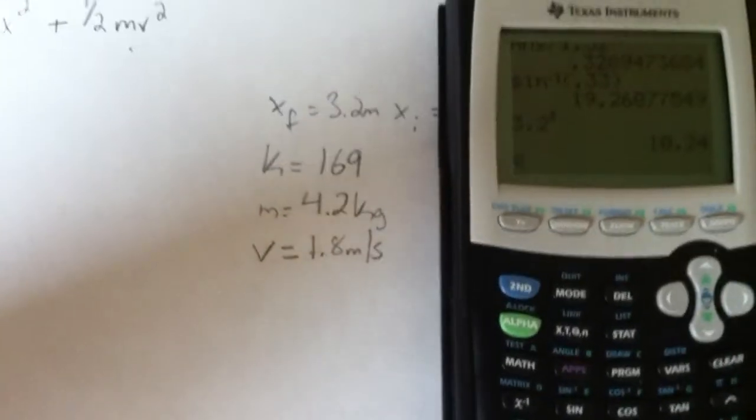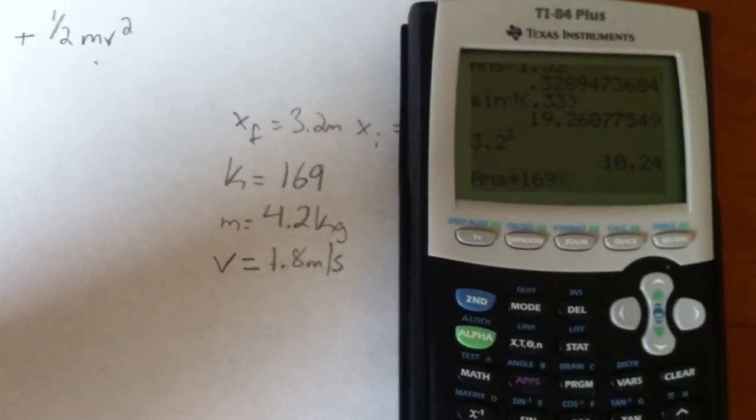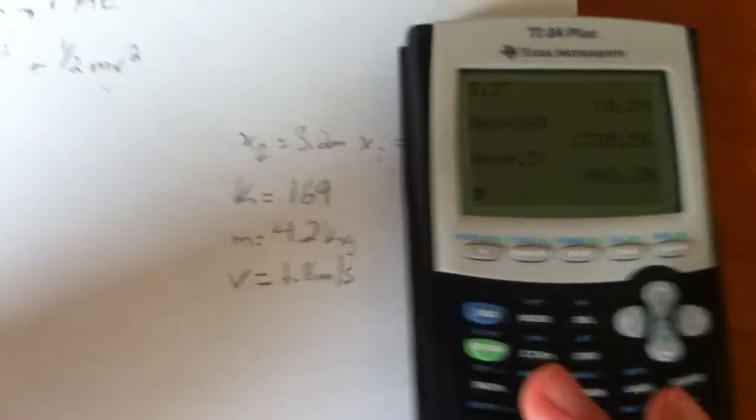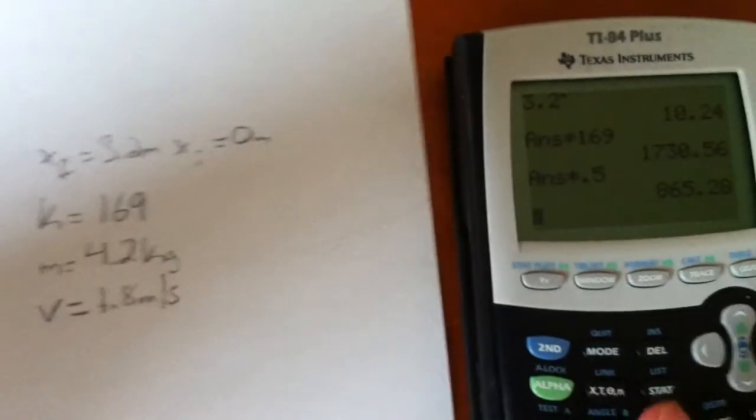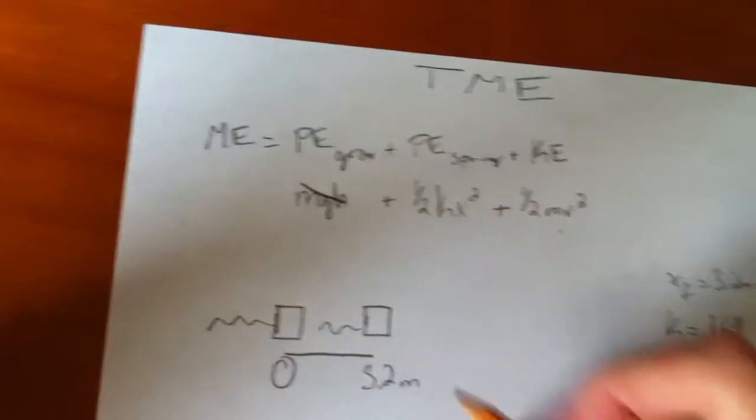Multiply that by the spring constant, which is 169. Now, we take half of that. 865.28. We'll just say 865.